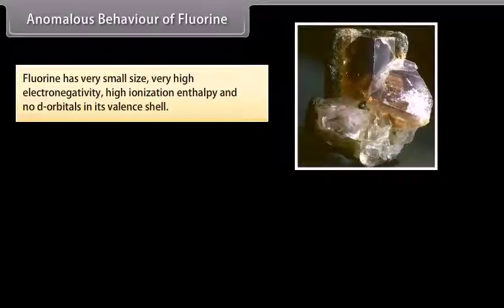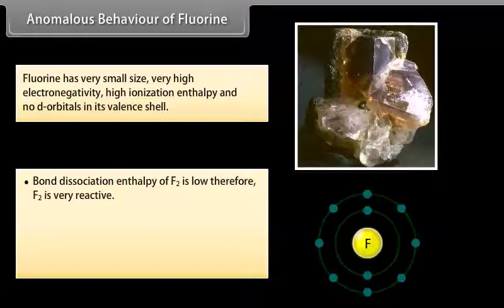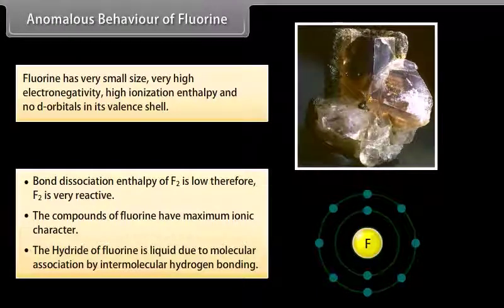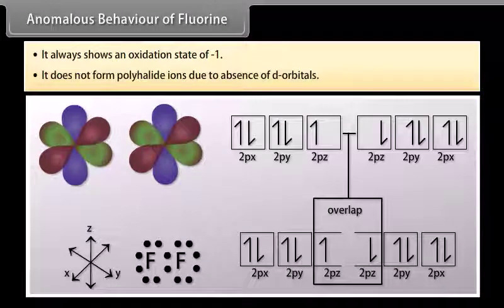Anomalous behavior of fluorine: Fluorine has very small size, very high electronegativity, high ionization enthalpy, and no d-orbitals in its valence shell. It exhibits different behavior from other halogens: the bond dissociation enthalpy of F₂ is low, making F₂ very reactive; its compounds have maximum ionic character; HF is a liquid due to intermolecular hydrogen bonding; it always shows an oxidation state of −1; and it does not form polyhalide ions due to the absence of d-orbitals.